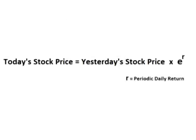Each day, the price of an asset such as a stock is the previous day's price times e raised to some value r. The r is the periodic rate of return — the rate that the asset increased or decreased that day.